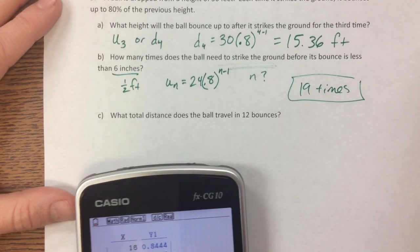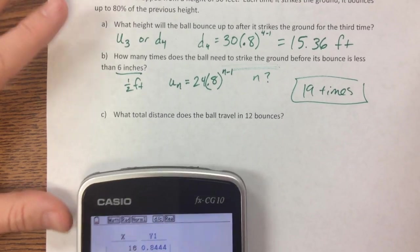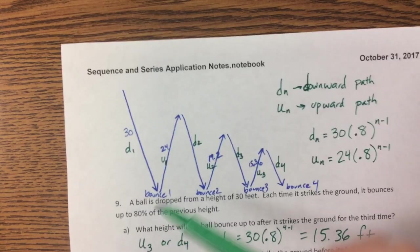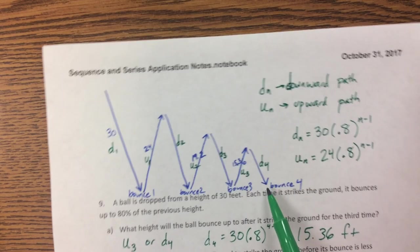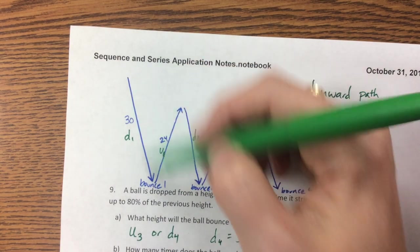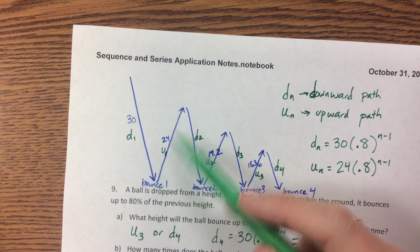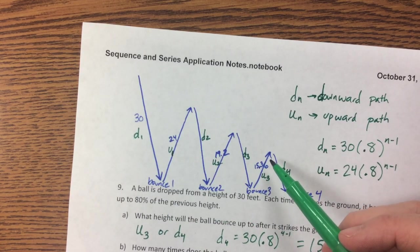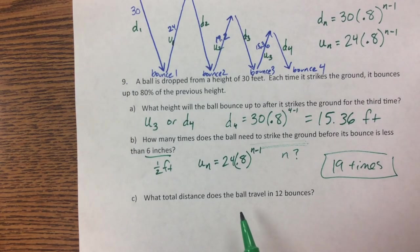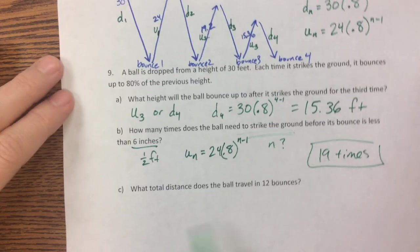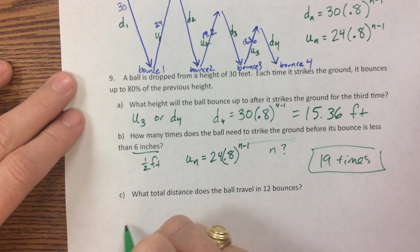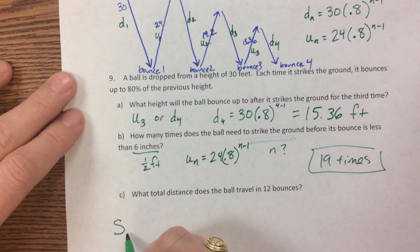What total distance does the ball travel in 12 bounces? Notice when we look at the picture, say we change that problem, so what's the total distance it travels by bounce four? Well notice it has gone down one, two, three, four times, but it's gone up one, two, three times. So if I want to do the total distance, the total distance it does in 12 bounces, it needs to go down 12 times and up, so it's the sum of 12 times plus the sum of 11 times.